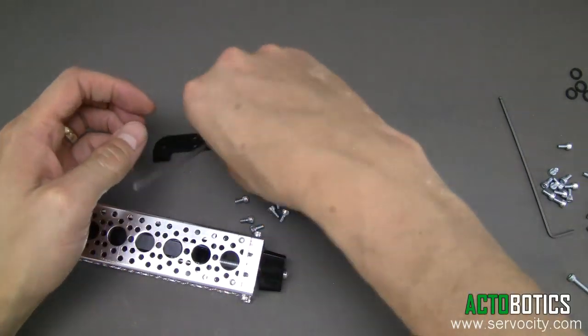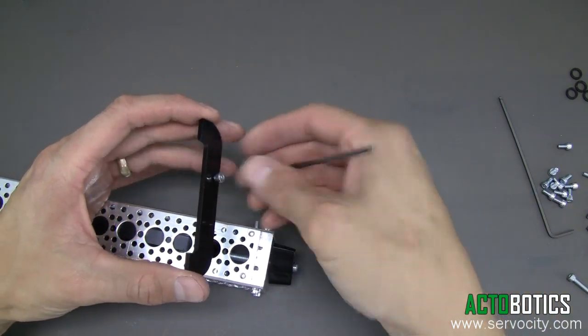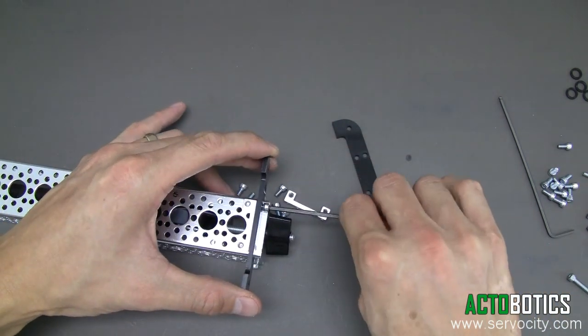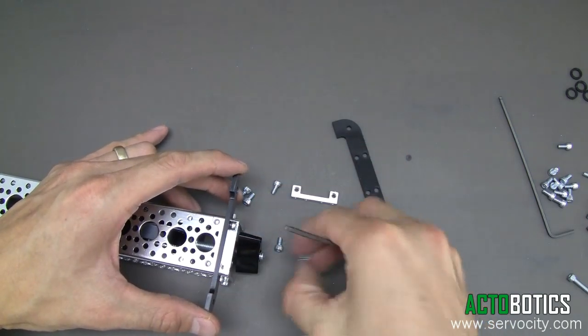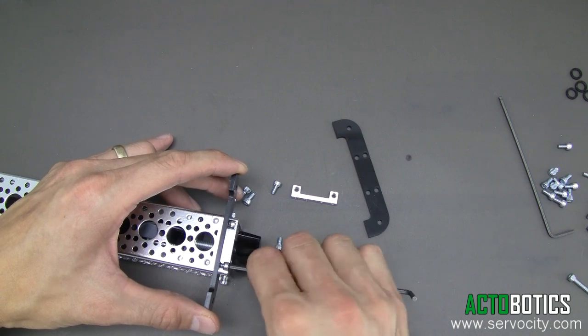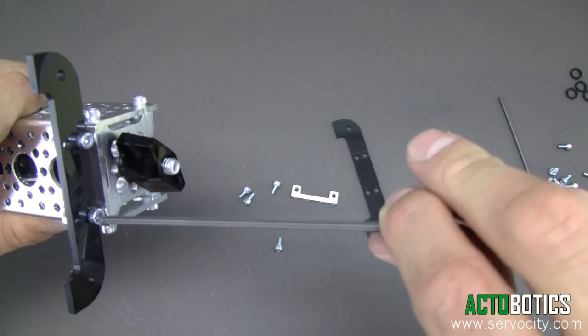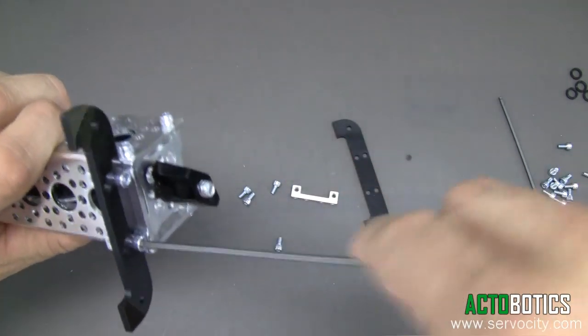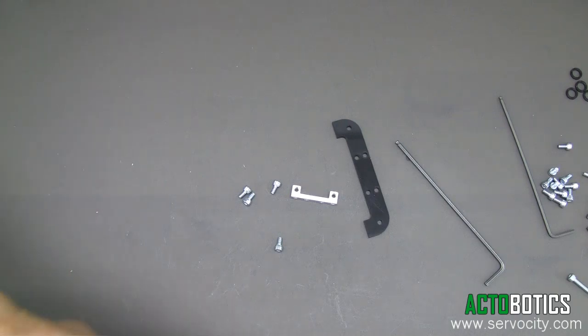Next, we're going to go ahead and attach one of the feet here. Run that in like that. The other screw here. And tighten those down just like that. There we go. One set is on. We're going to go ahead and flip this thing around.